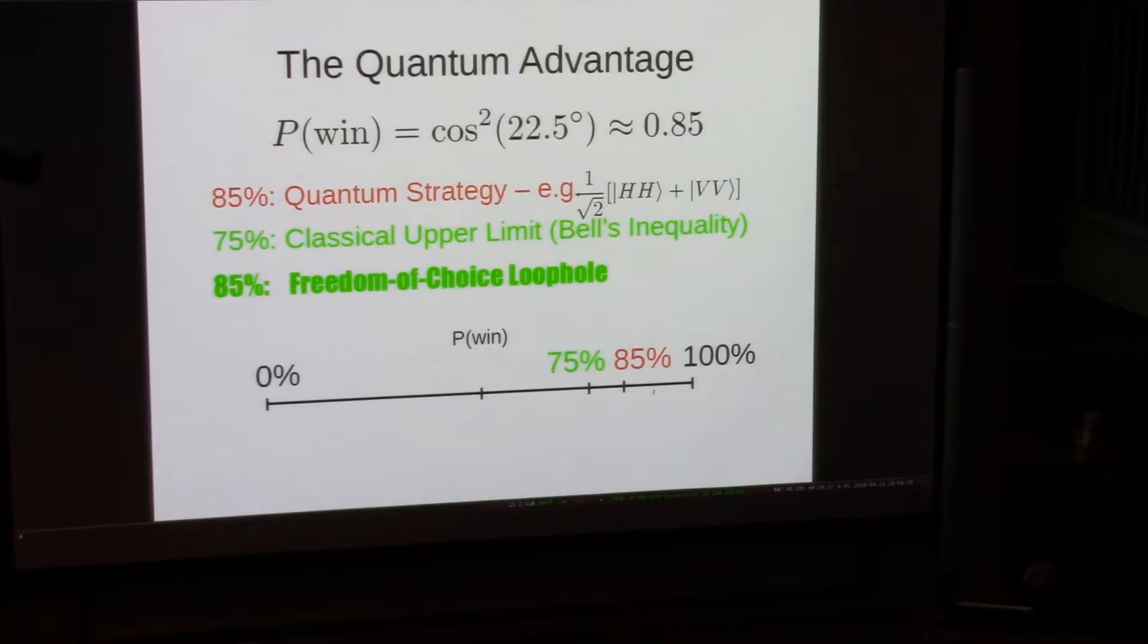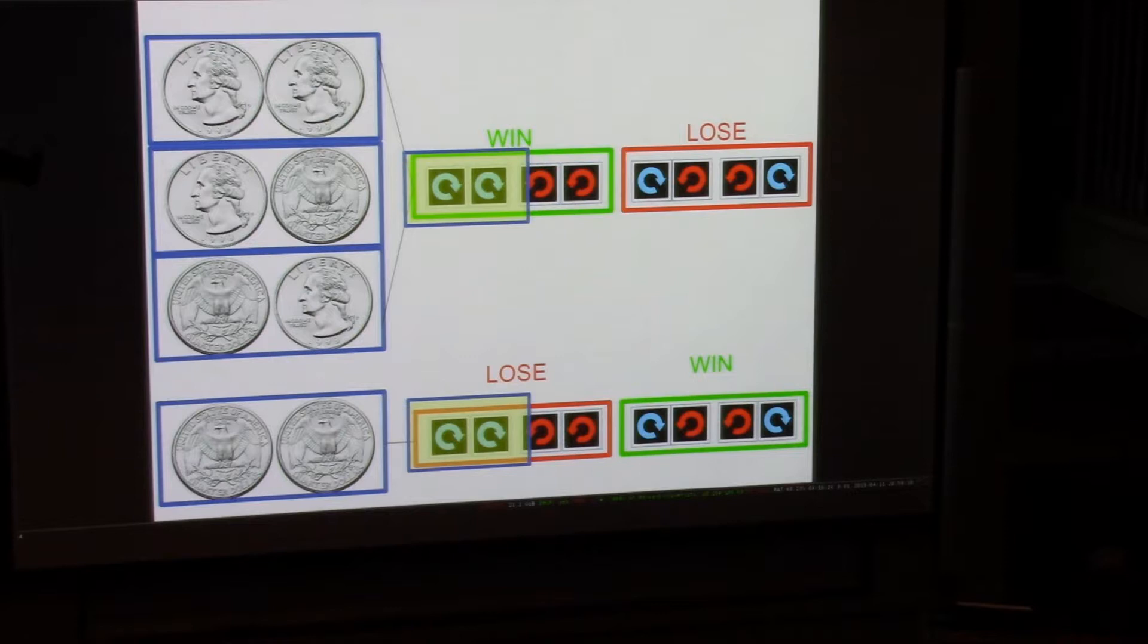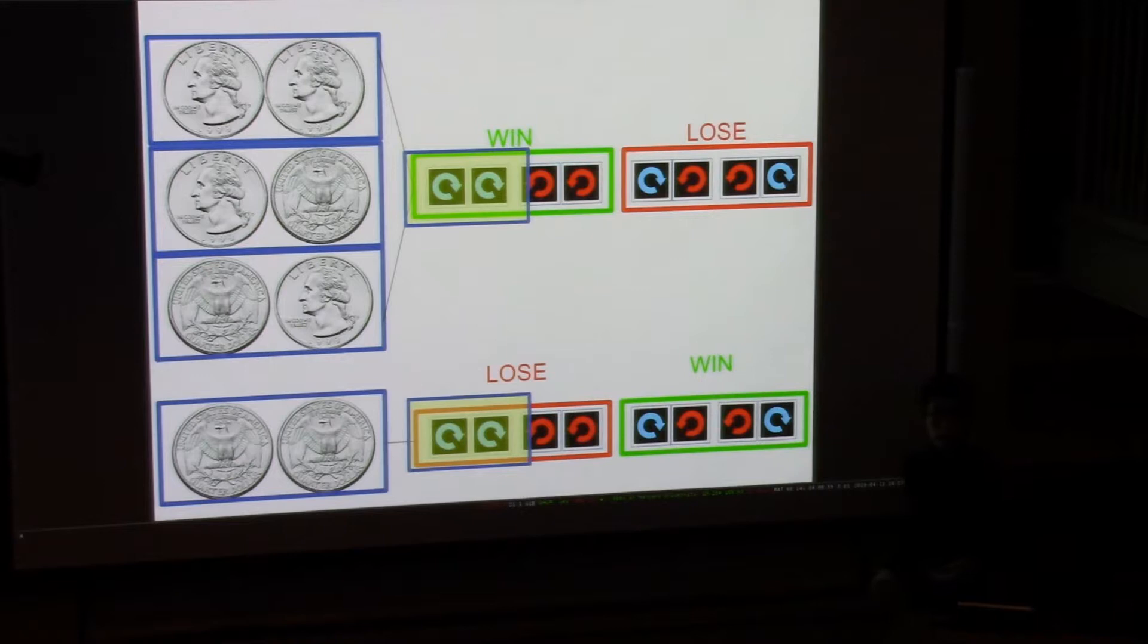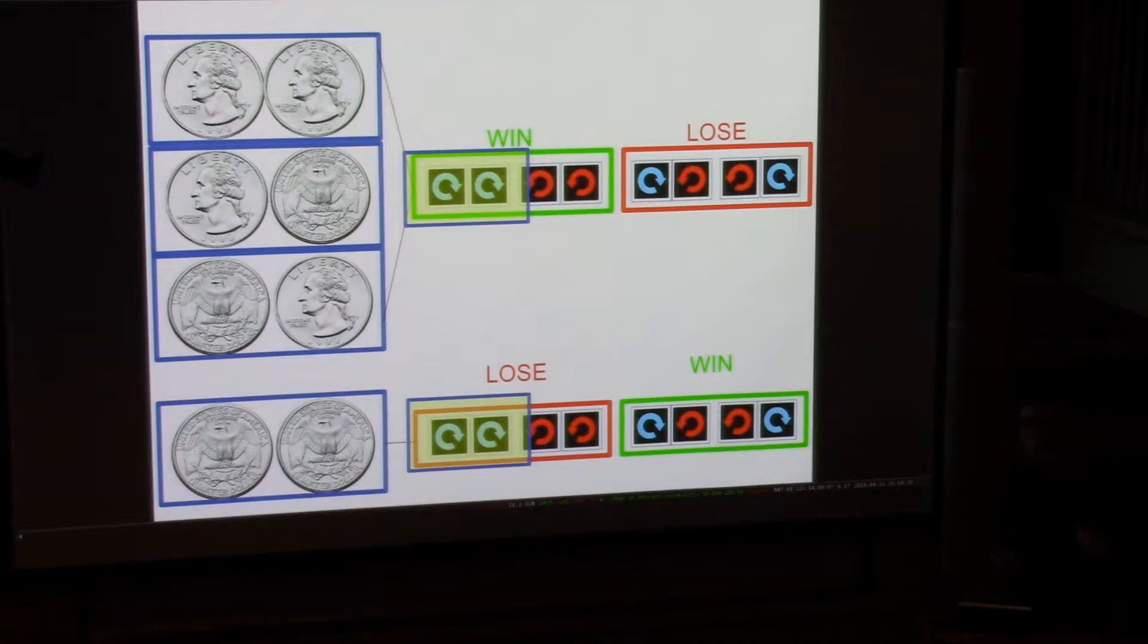When you put this all together, it turns out that if you choose these magic angles, 0 and 22.5 degrees on Alice's side, and 45 and 67 degrees on Bob's side, these photons will actually win that casino game 85% of the time. This is classically impossible, but it's something we see in quantum mechanics. The probability of winning is actually the cosine squared of 22.5 degrees. But the point is, it violates this classical upper bound. That's how we know that our two photons are entangled.